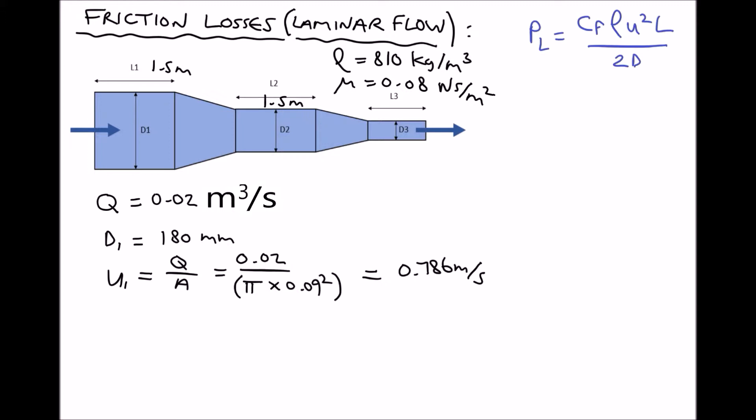Now as we go back and inspect our Darcy formula, we now know all of the variables except the coefficient of friction. There's a method that we need to apply in order to determine the coefficient of friction, and it involves the use of the Reynolds number. So let's calculate our Reynolds number in the first section of the pipe.